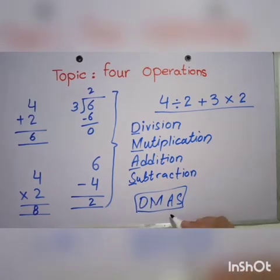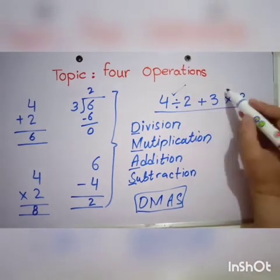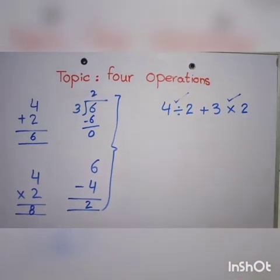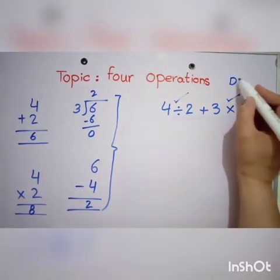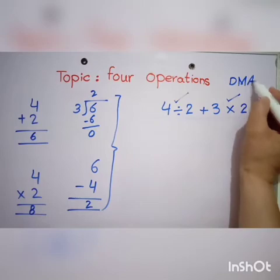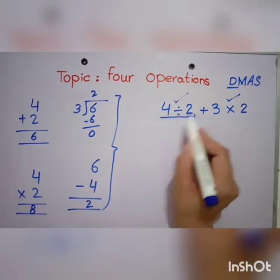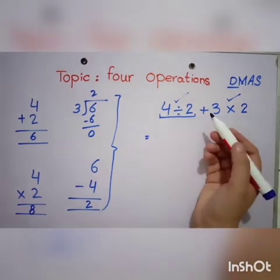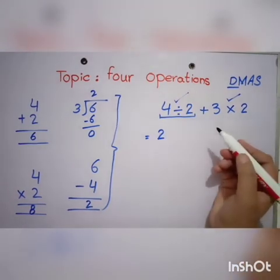According to this rule, we have to solve division, then multiplication, and last addition. Now let us solve this expression. First we have to divide. 4 divided by 2 - if we work it out, 2 twos are 4, the answer is 2.